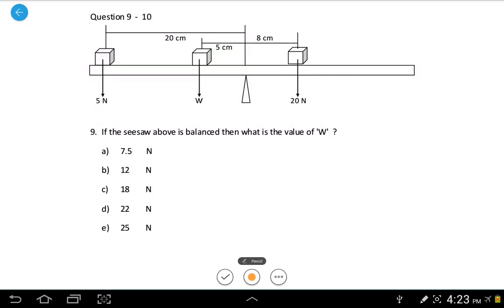Hi guys, we are doing chapter 7, number 9. This question is about turning effect of force. Now, the question says, if the seesaw above is balanced, then what is the value of W?